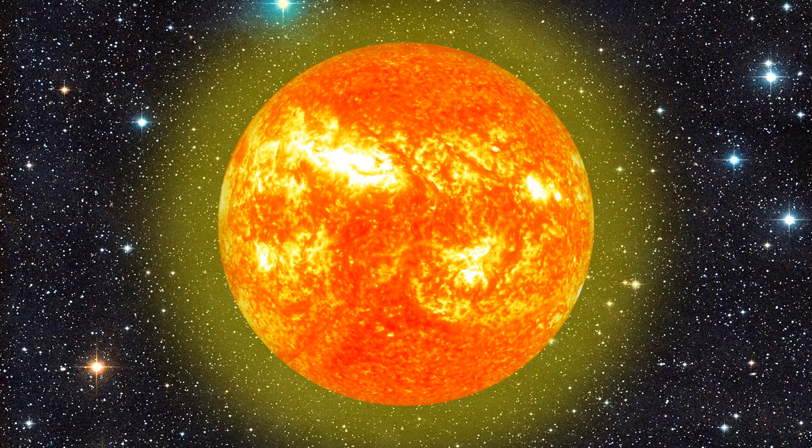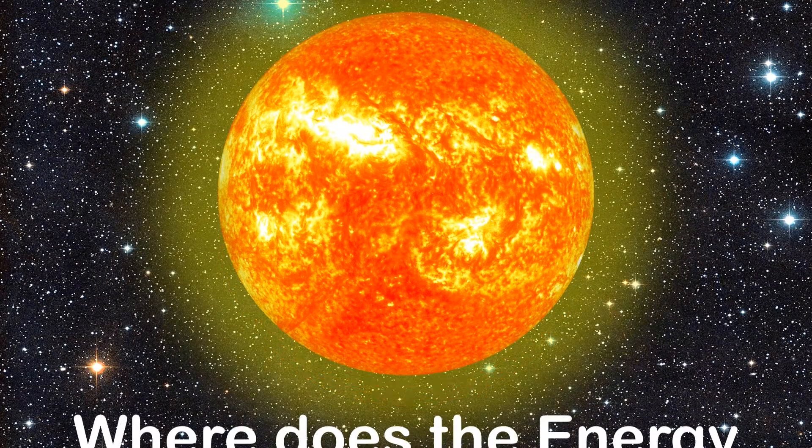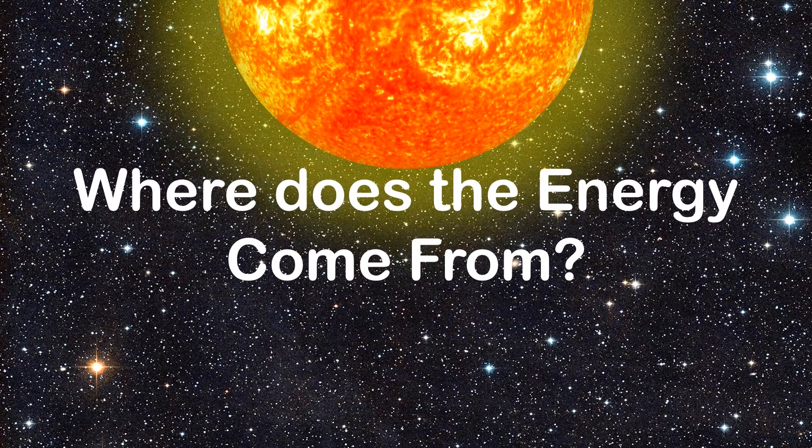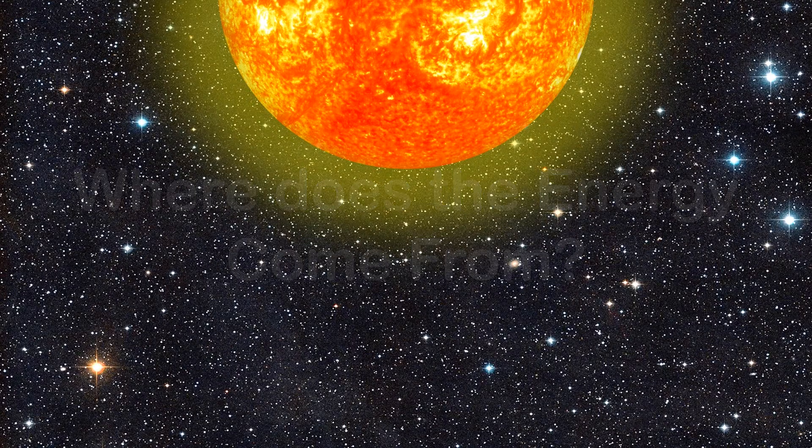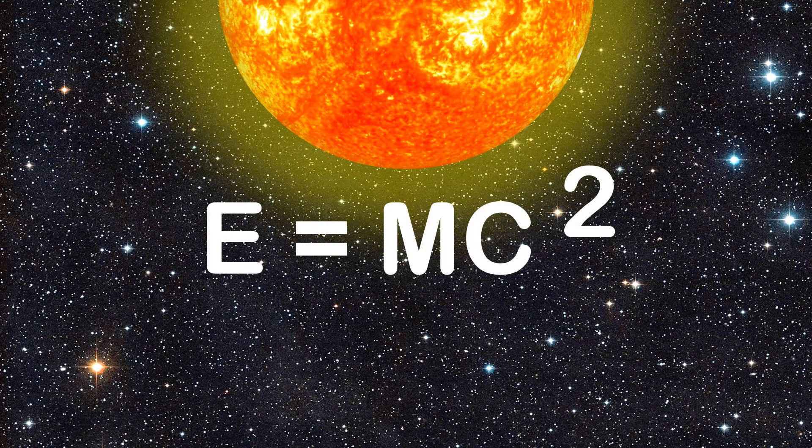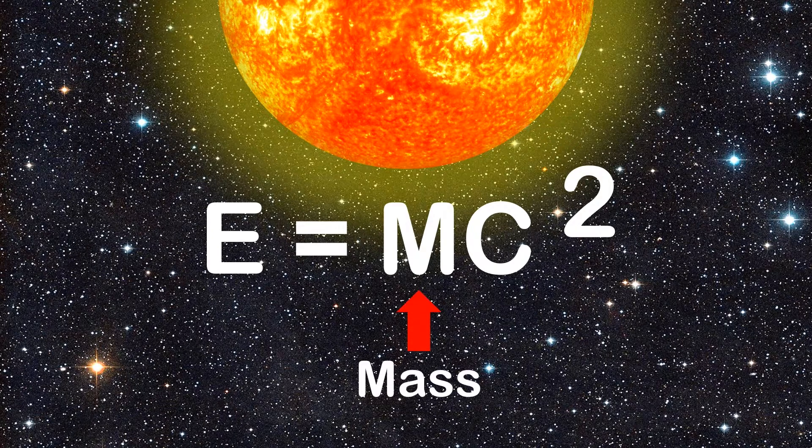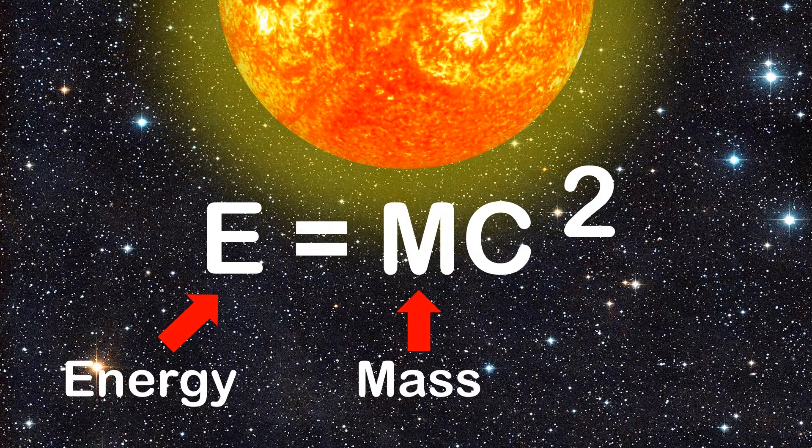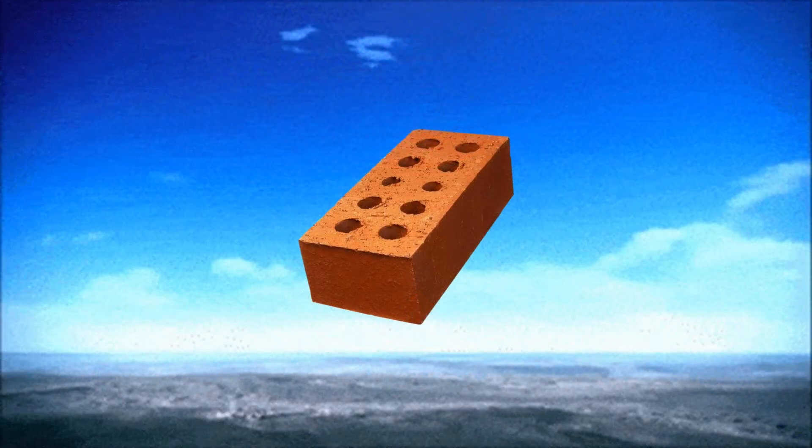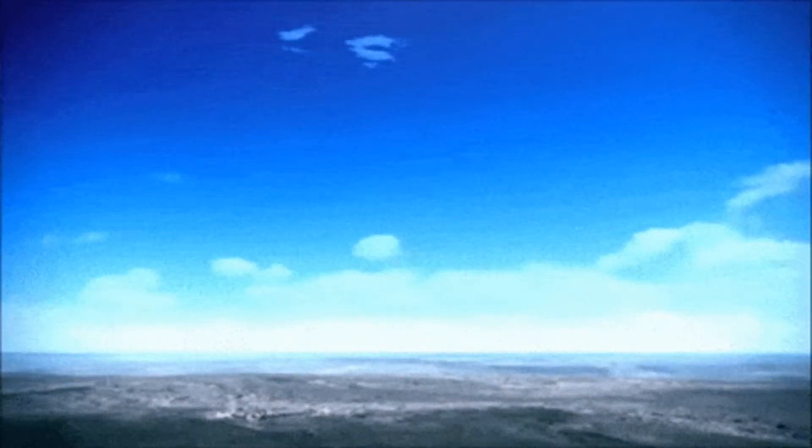But that energy still has to come from somewhere. So finally, where does the energy released by fusion actually come from? Well, the answer lies in the equation E equals MC squared. It basically says that a small amount of mass contains a huge amount of energy. For example, if you converted the mass of a single brick into pure energy, it would equal the largest nuclear bomb ever detonated.